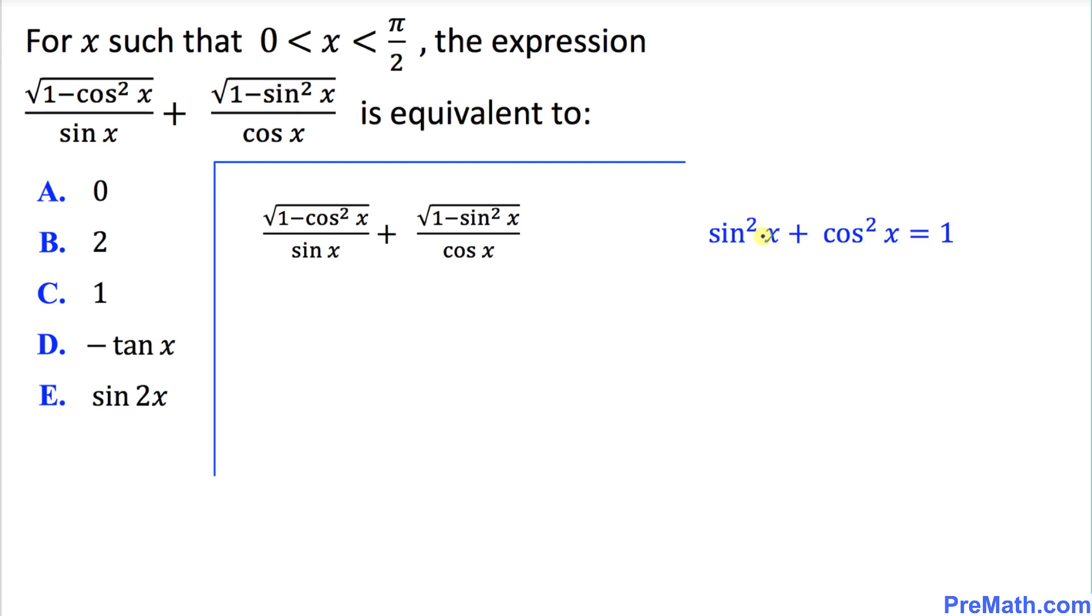Here is our trigonometric identity. Let me move cos²x to the other side, so we end up with sin²x = 1 - cos²x. Now let's focus on this 1 - cos²x in this radical. I can replace that by sin²x.